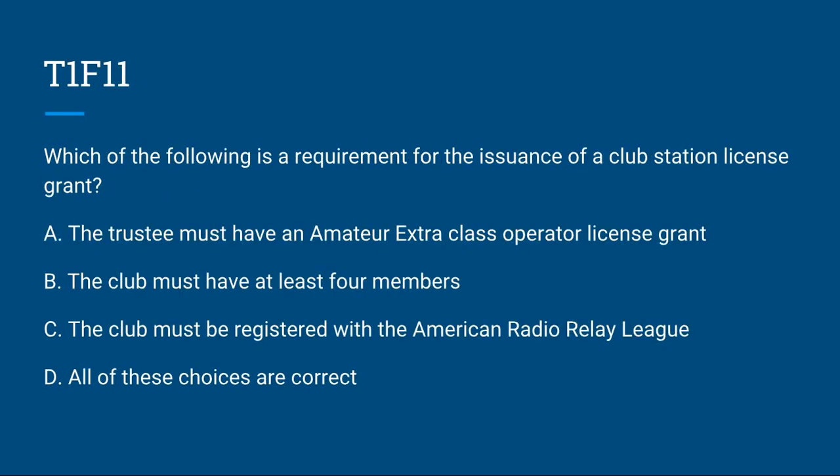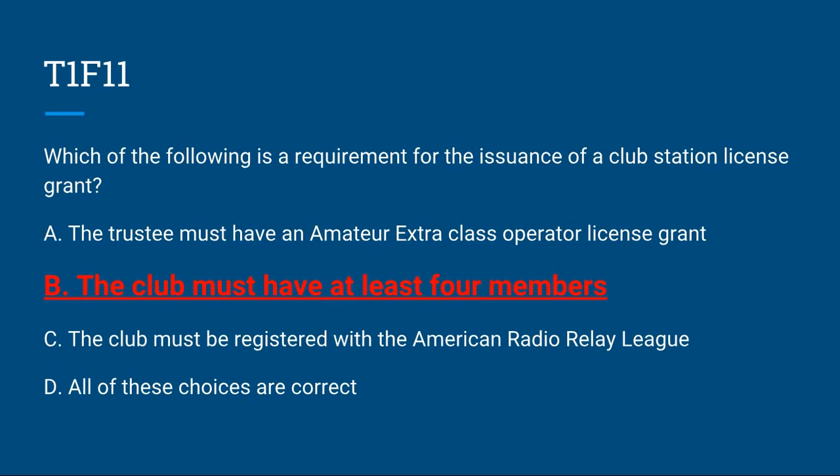T1F11: Which of the following is a requirement for the issuance of a club station license grant? A. The trustee must have an Amateur Extra class operator license grant. B. The club must have at least four members. C. The club must be registered with the Amateur Radio Relay League. Or D. All of these choices are correct. Correct answer is B: the club must have at least four members.